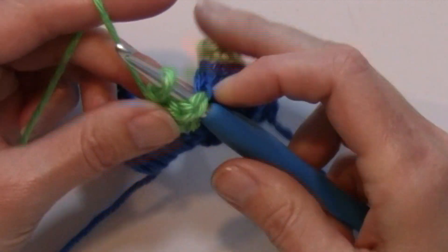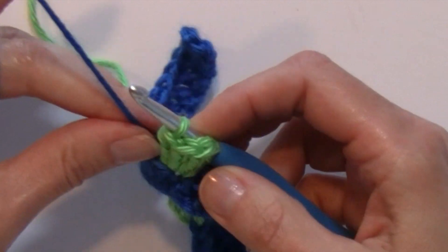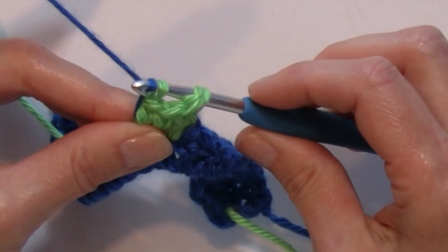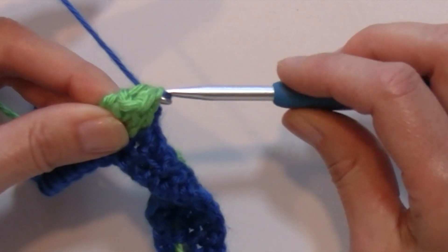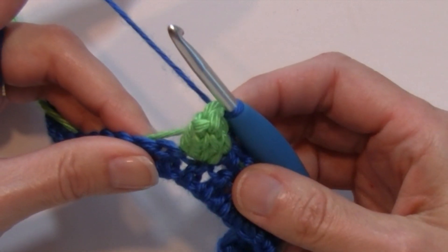Drop that color. Pull in color A by pulling it through that loop and the first double crochet made, and I have my popcorn made again.